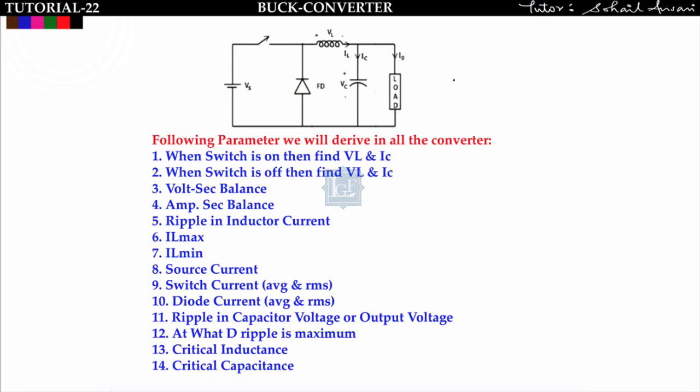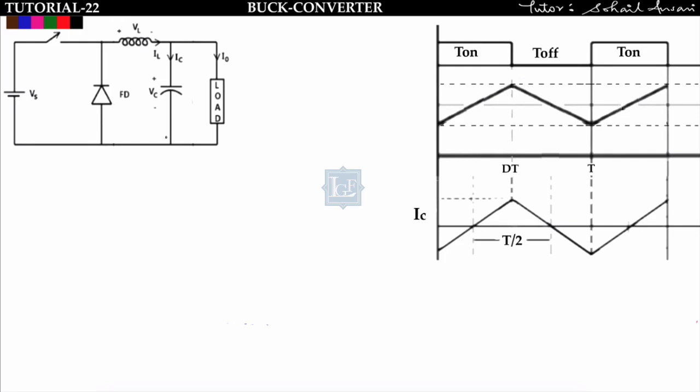In the previous lecture we covered the introduction to choppers, as well as the concepts of volt-second balance and ampere-second balance. We said we would derive the following parameters in all converters from serial number 1 to 14. In this lecture we will start the buck converter, which is lecture number 22.